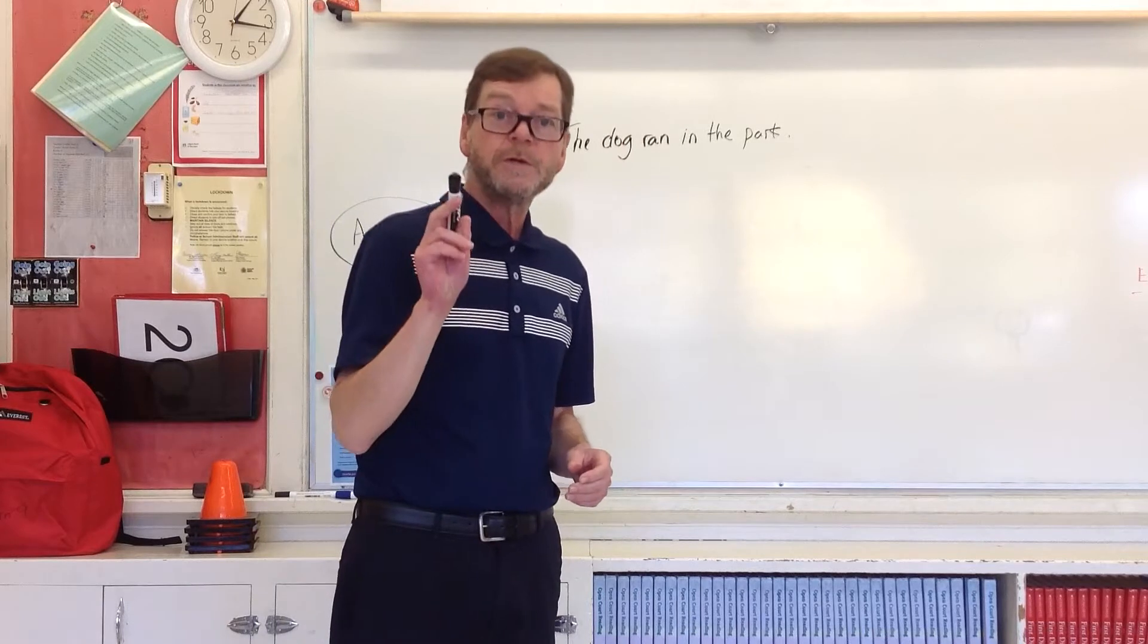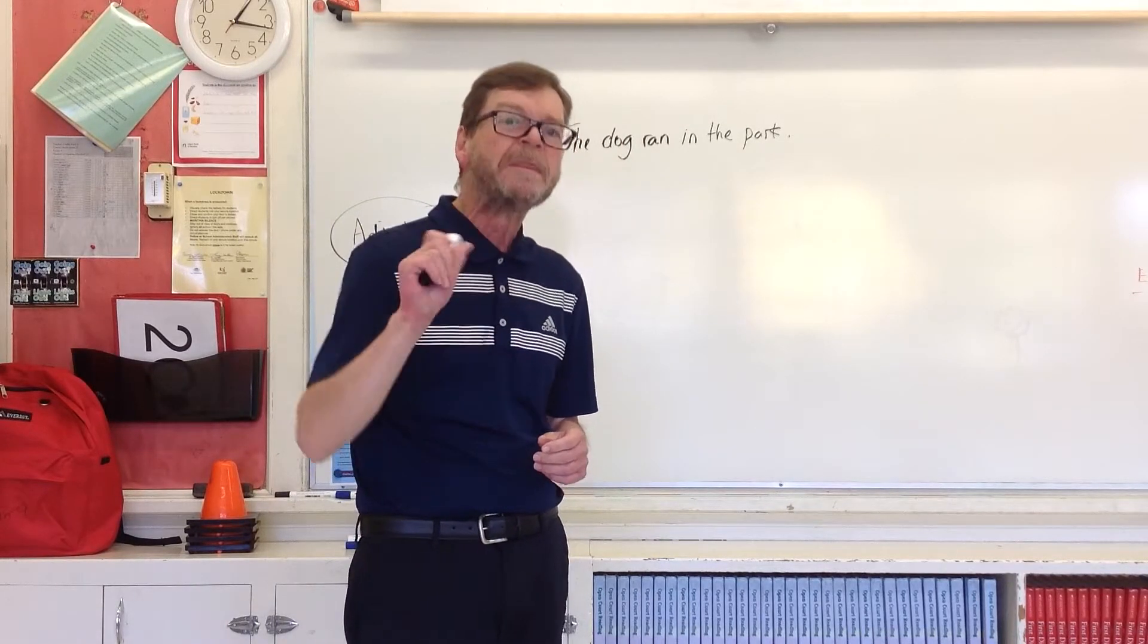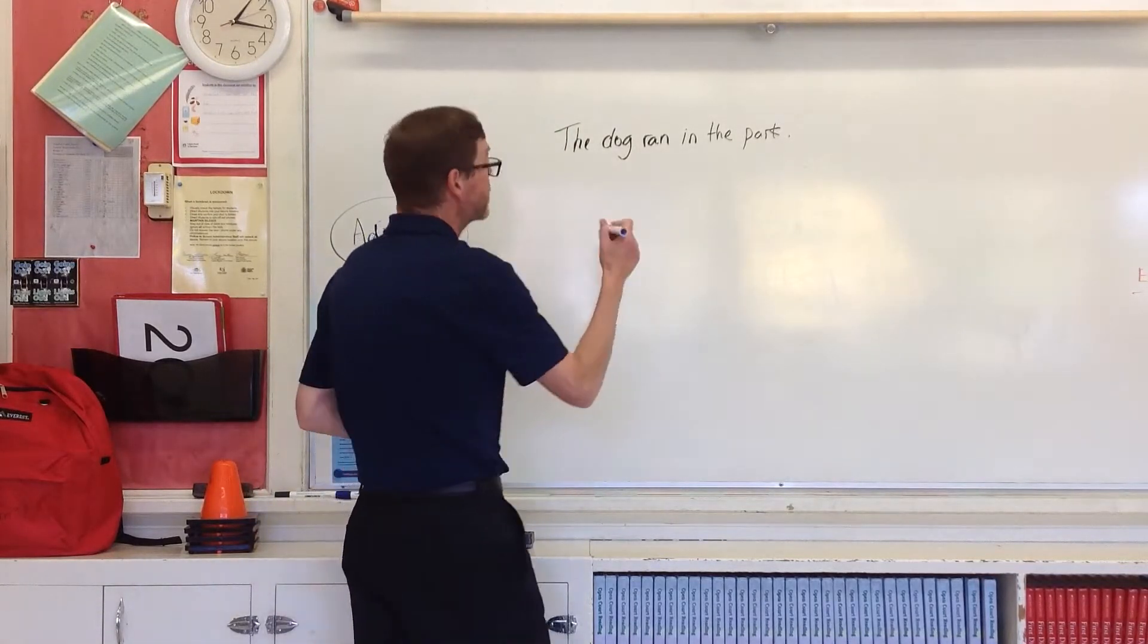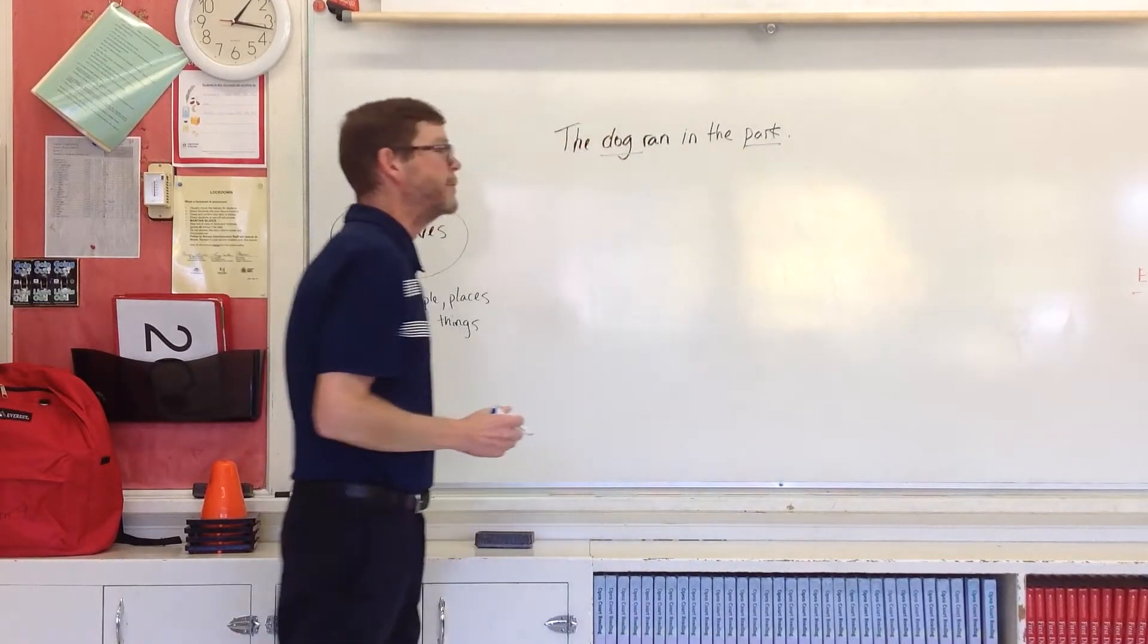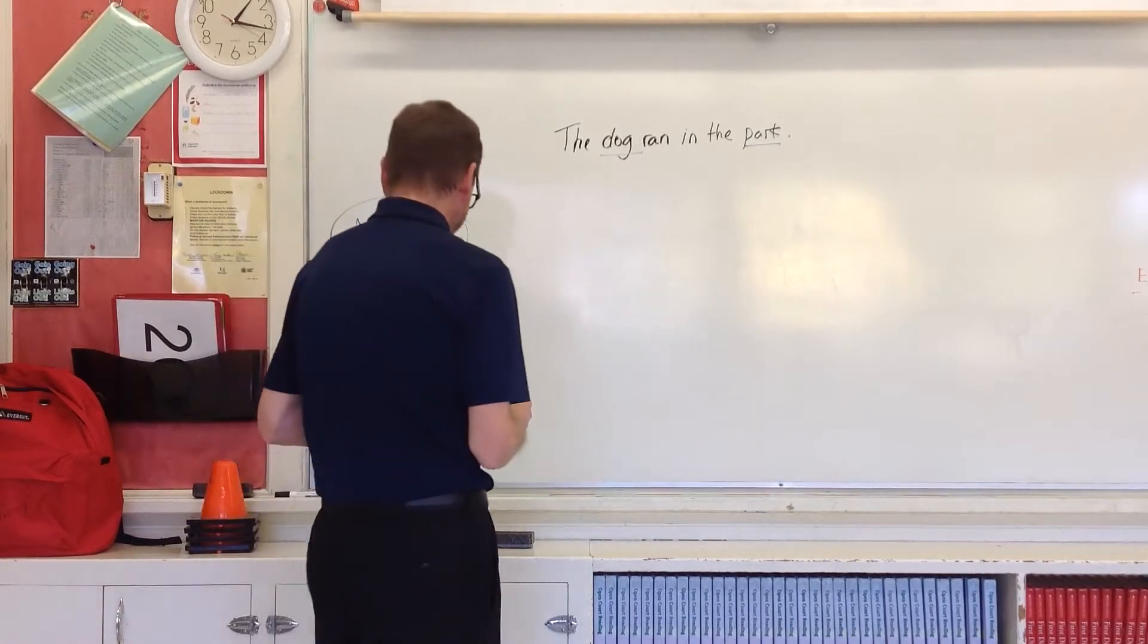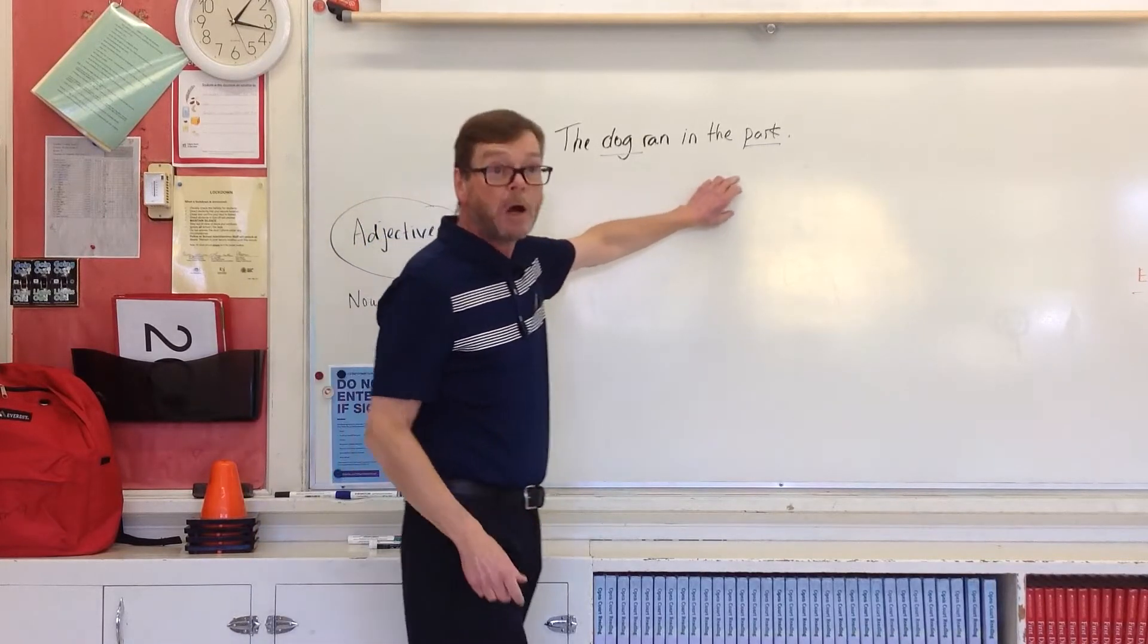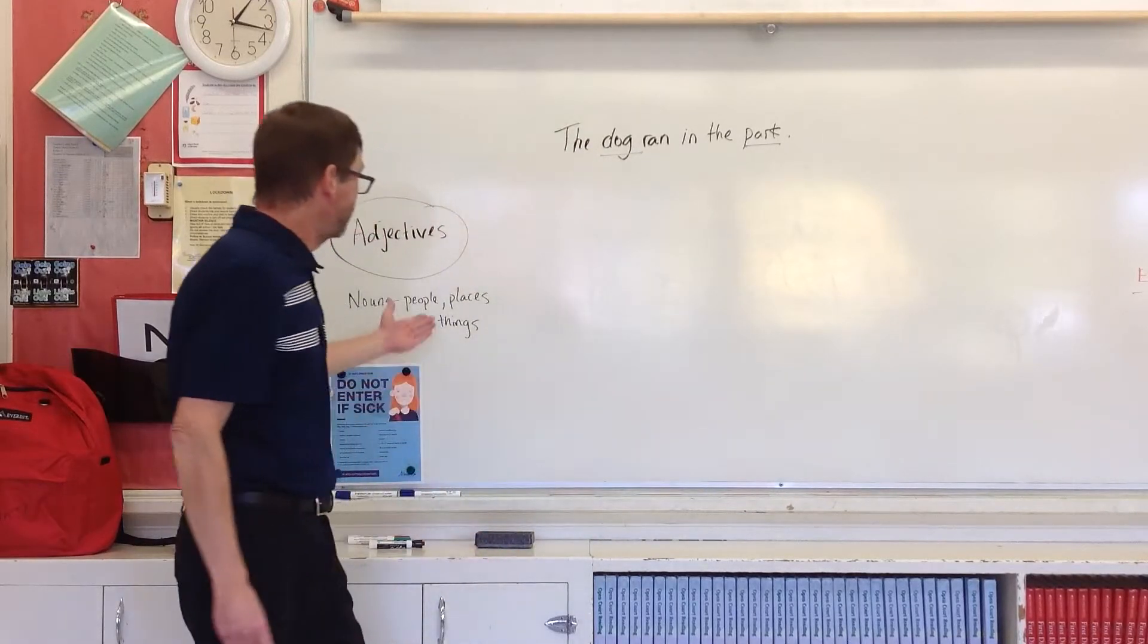First of all, I want you to underline the two nouns in this sentence. There are two. See if you can figure it out yourself before I underline them. But the two nouns are the dog and the park. Okay, so I'm going to underline those two words. You do that too, please. So, the dog and the park are our nouns. They're people, places, or things. So, the dog is a thing. Park is a place. So, that's our nouns.